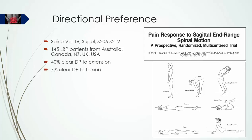These researchers found that 40% progressively worsened with repeated flexion and progressively improved with repeated extension — that is, they had a directional preference to extension. In 7%, the opposite pattern was observed. Though lateral flexion and asymmetrical extension movements were also studied, these data have never been published and are now believed to be lost.